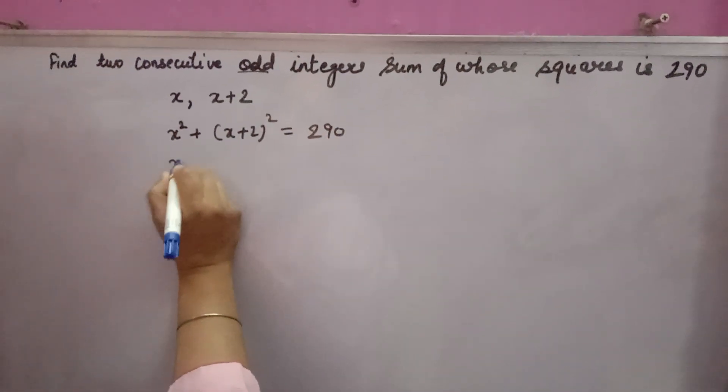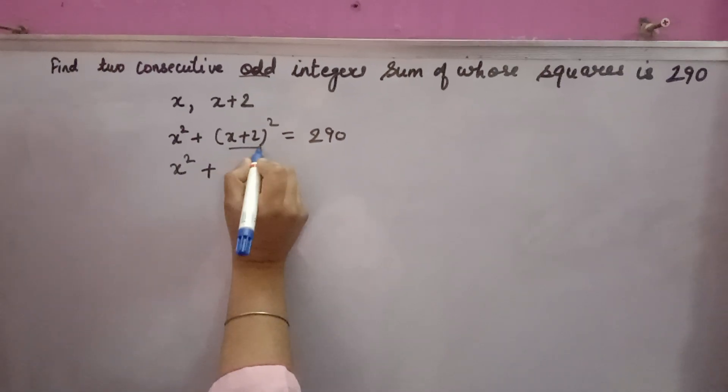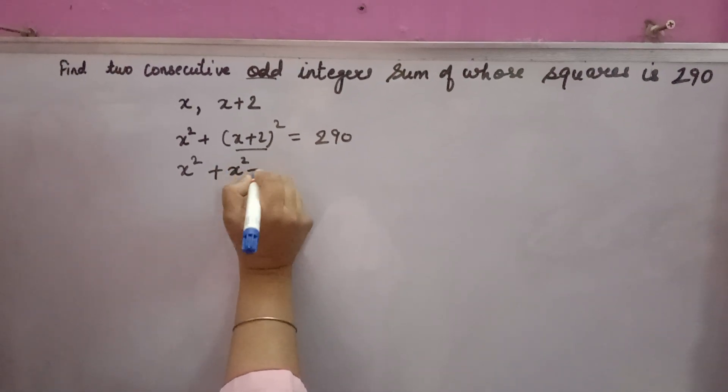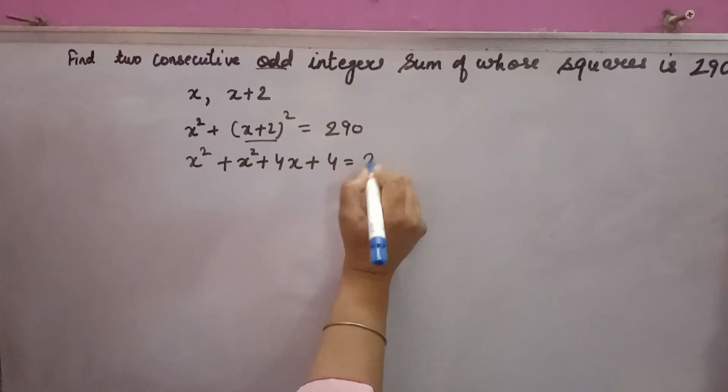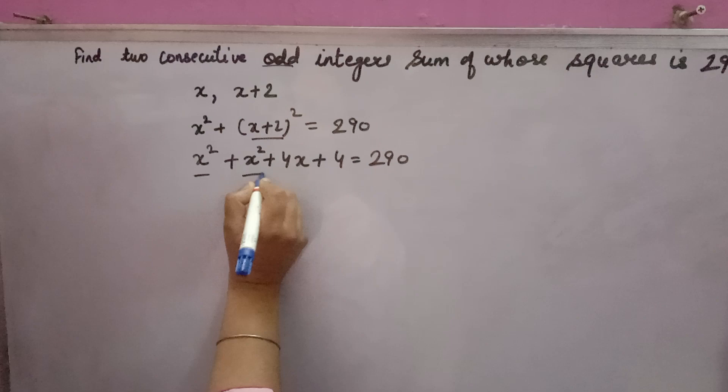Now you solve it. (x + 2) whole squared, you will expand: x squared plus 2 times x times 2, that is 4x, plus 2 squared is 4, equals 290. x squared plus x squared is 2x squared, plus 4x, plus 4, equals 290.